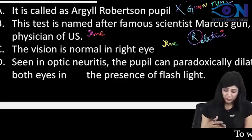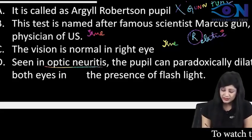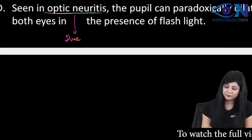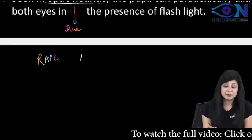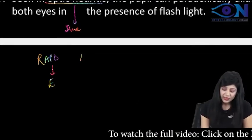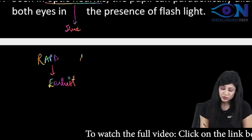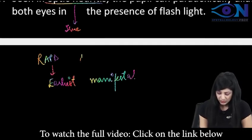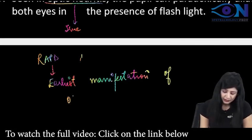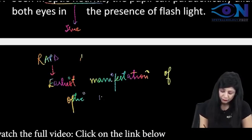Afferent means optic nerve, and seen in optic neuritis, this is also true. When I talk about RAPD, this is actually the earliest manifestation of optic nerve defect.